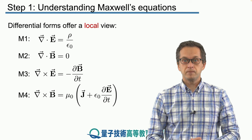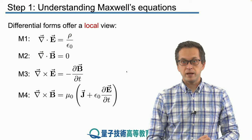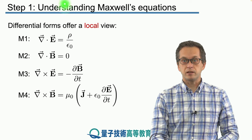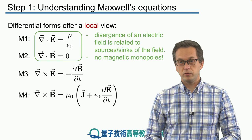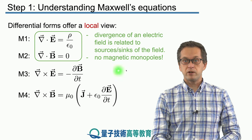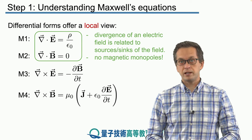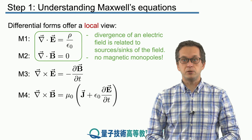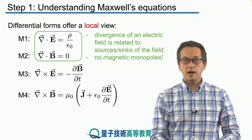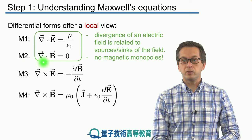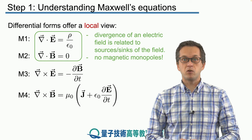And here they are again. In this case, we are always looking at a point in space, and at that point these are the four equations that electric and magnetic fields must satisfy. The first equations tell us about the divergence of the field, and the divergence of the electric field is related to sources and sinks — to electric charges and electric charge distributions. Similarly to the flux of a magnetic field through a surface, its divergence must be equal to zero because there are no magnetic monopoles.